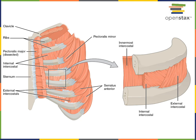We'll start with the intercostal muscles, which are located in between adjacent ribs. There are internal intercostal muscles as well as external intercostal muscles. As the name implies, the internal intercostal muscles are deep to the external intercostal muscles, as you can see in the zoomed-in view. There is an internal intercostal muscle and then an even deeper layer of the innermost intercostal muscles.